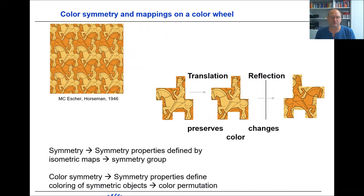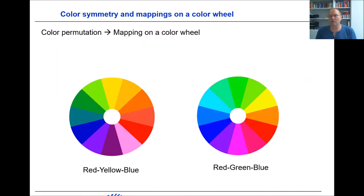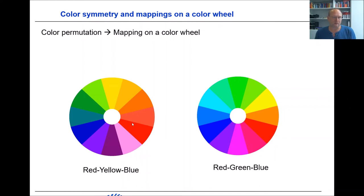For coloring symmetric objects we need a color permutation. In this work, such a color permutation is realized by mapping onto a color wheel — for instance a red-yellow-blue color wheel or a red-green-blue color wheel. Colors on the color wheel can be used as a color permutation: for instance, taking yellow, you may take purple as its permutation. Using colors that are exactly opposite on the color wheel — complementary colors — are supposed to look very nice together.